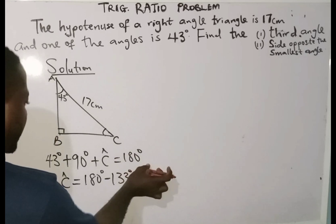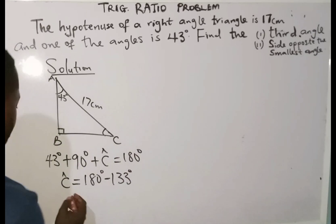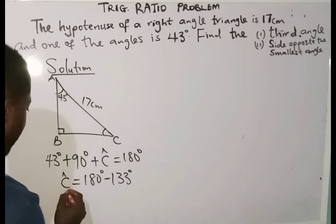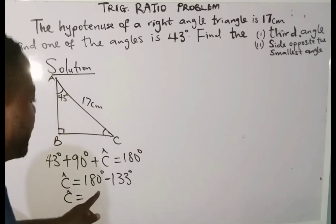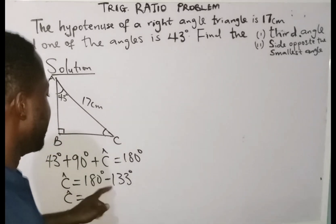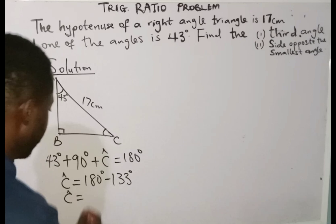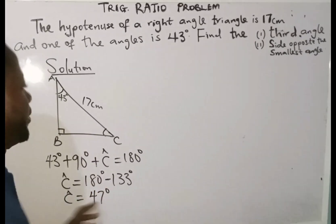My angle C will now be equal to 180 degrees minus 133 degrees, which is going to give us 47 degrees.